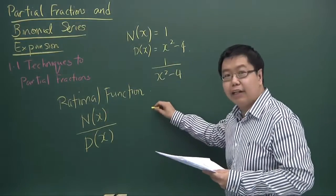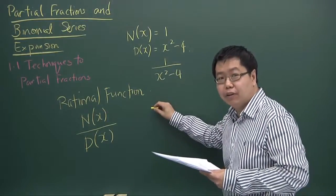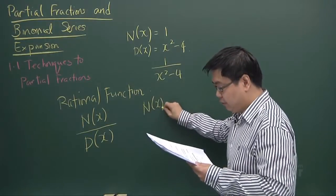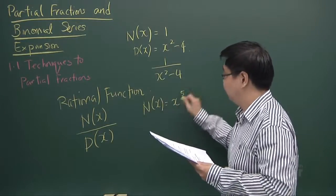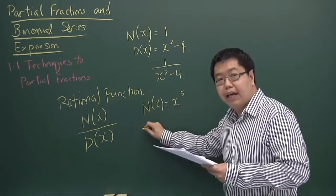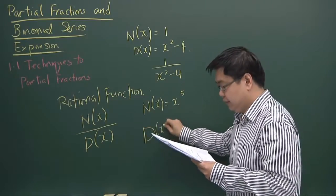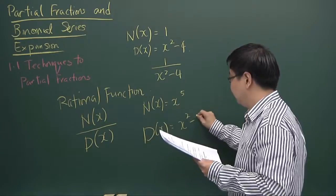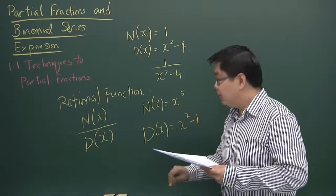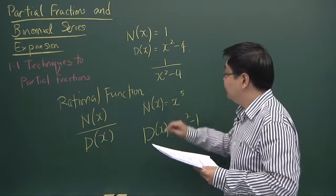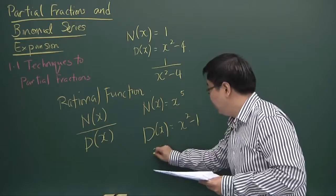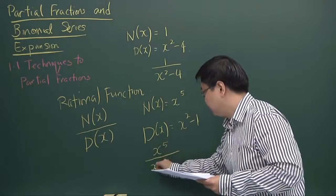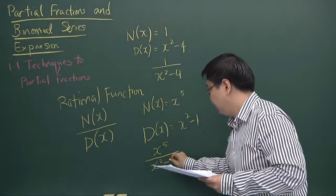Let's take a look at the second example that is on your handouts. There is N(x) equals x to the power of 5 and D(x) equals x² minus 1. In this case, the rational function would be x⁵ over x² minus 1.